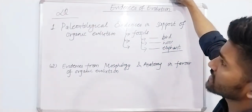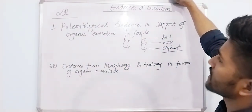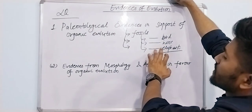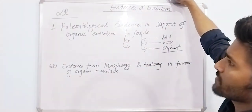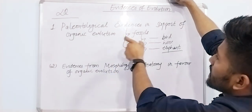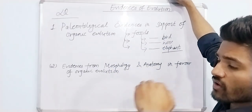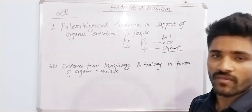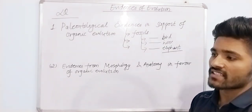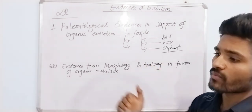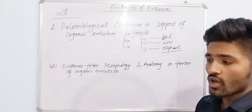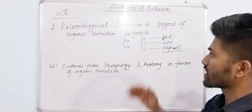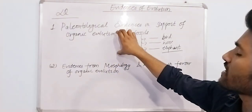In conclusion, fossils of birds, horses, and elephants provide evidence. By studying fossils, we can see that organisms evolved from lower organisms to higher organisms through connecting forms.